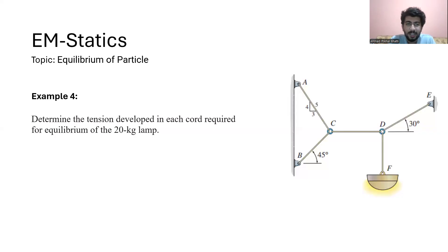In this example, we have to find the connection forces that are produced in the cords. We have cord AC, cord BC, cord CD, and cord DE.